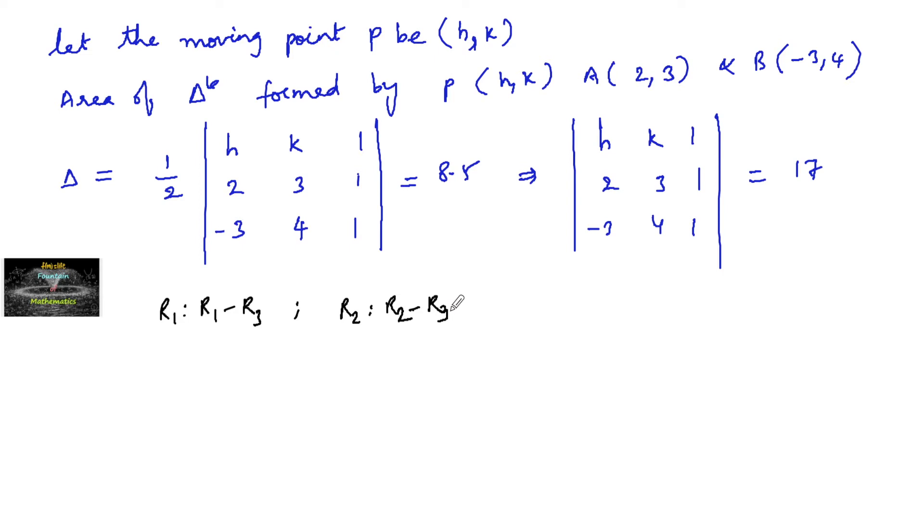So that your determinant becomes H plus 3, K minus 4, 0; 5, minus 1, 0. The third row as it is, which equals to 17.